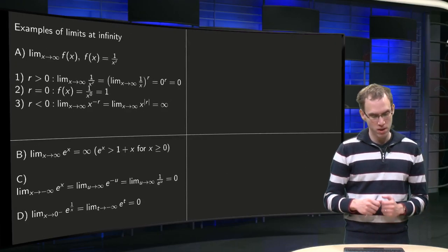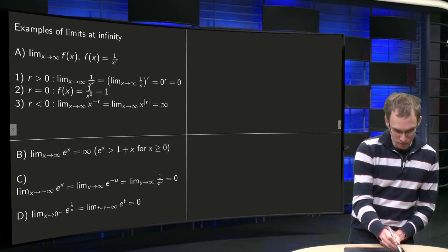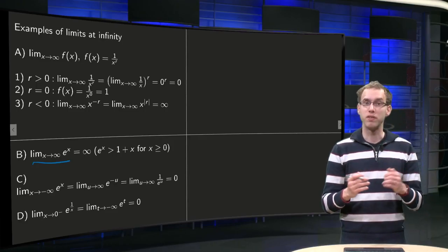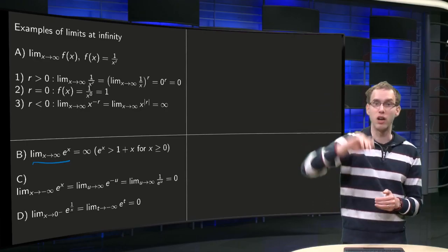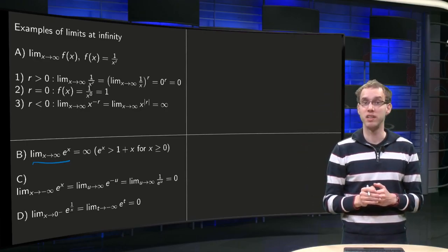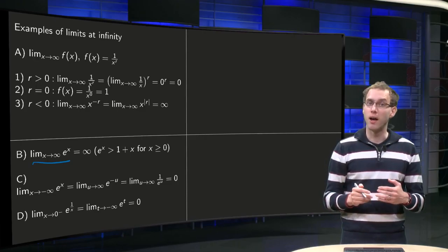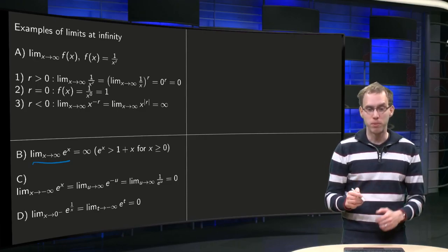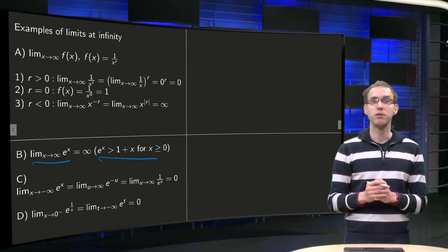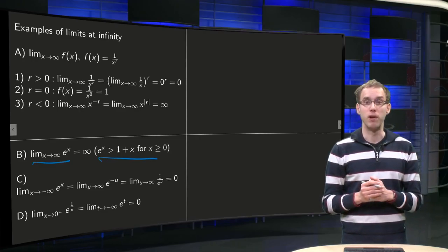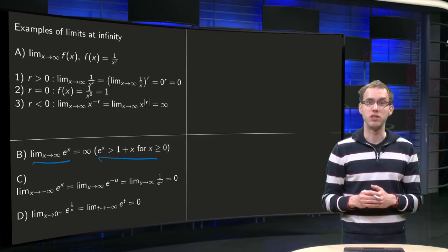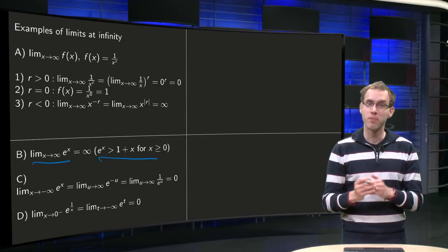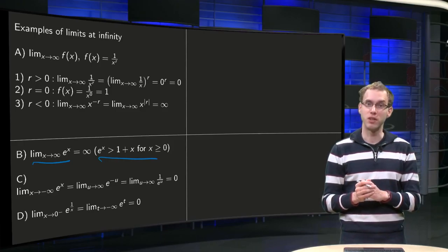Let's continue with the exponential function. The limit of e^x as x goes to infinity: you know the graph of the exponential function becomes very large — exponentially large. To show this from first principles, we can use that e to the power x is bigger than 1 plus x for positive x. The right-hand side blows up as x goes to infinity, so does the left-hand side, because that one is even bigger. So the exponential function blows up as x goes to infinity.